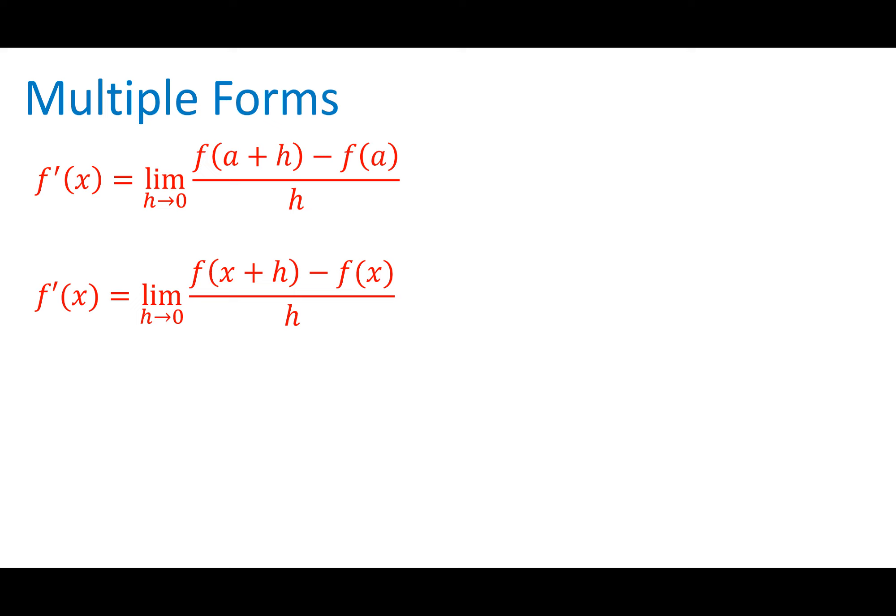It can get confusing because — what's X, what's A? This would be the same thing: F of X plus H minus F of X. This one's actually a little bit easier to picture because X is the traditional X we think about. When I throw that A in there and tell you A is really X, that throws in a curveball. But we also have the alternate form: the limit as X approaches A of F of X minus F of A, all over X minus A. All of these mean the exact same thing — finding F prime of X, which is the slope of the tangent line at some point on our curve.